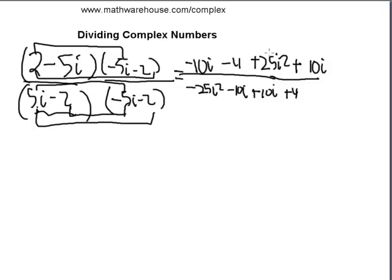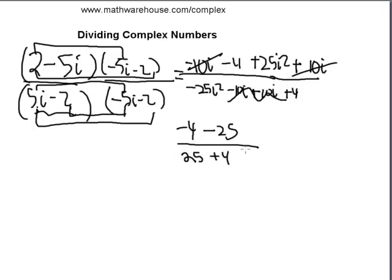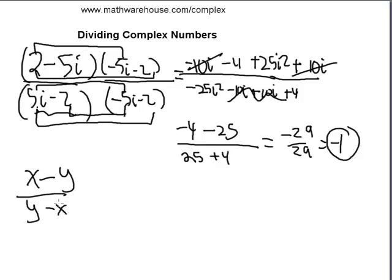Simplifying: negative 10i plus 10i cancels on top, and we're left with negative 4 plus 25i squared. Since i squared is negative 1, this becomes negative 4 minus 25, or negative 29. On the bottom, the i terms cancel, and negative 25i squared becomes positive 25 plus 4, or 29. So we get negative 29 over 29, which equals negative 1.